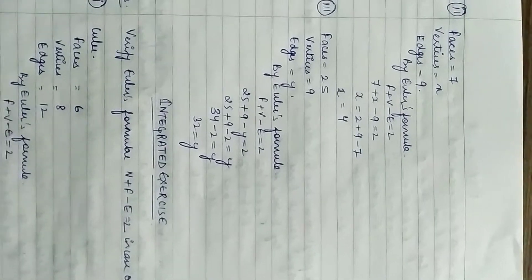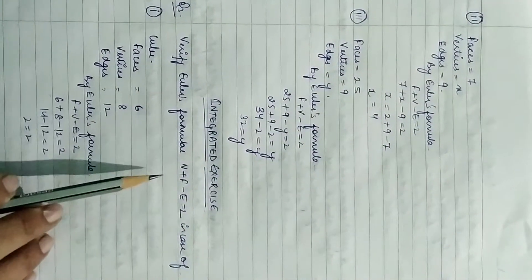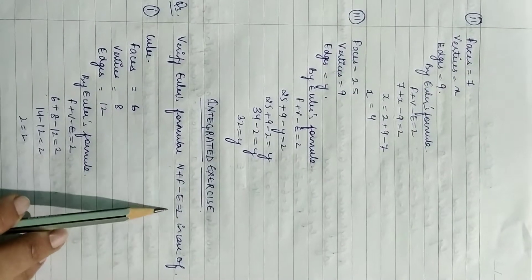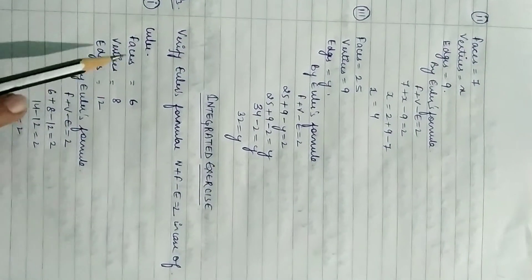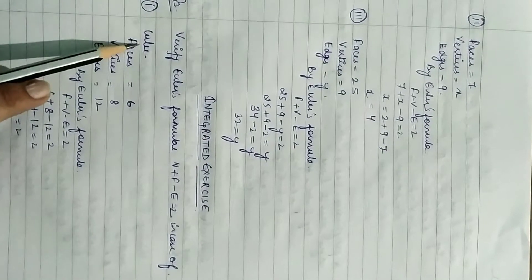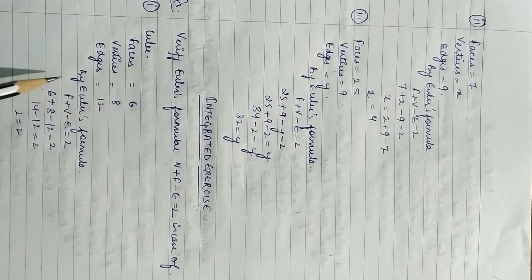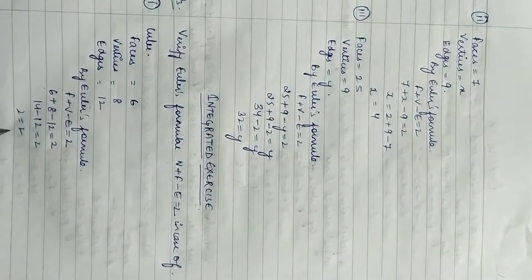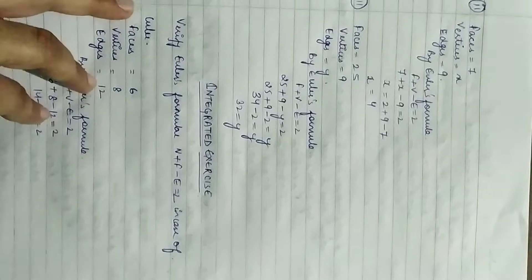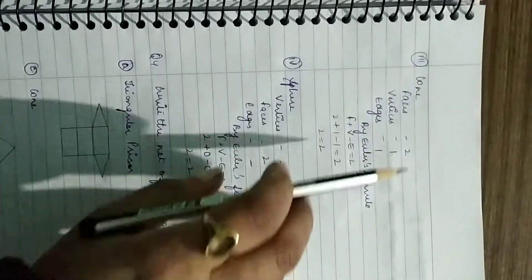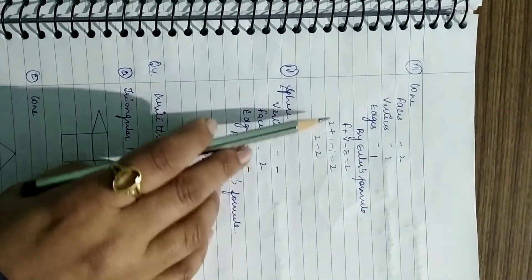In the integrated exercise, Question 3: verify Euler's formula V + F − E = 2 in each case. For a cube: faces = 6, vertices = 8, edges = 12. Substituting: 8 + 6 − 12 = 2. This confirms Euler's formula is verified for the cube.